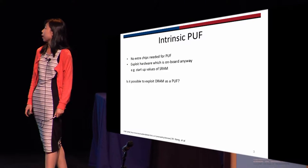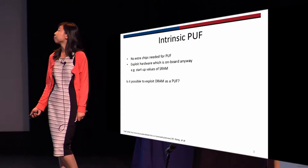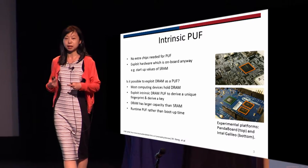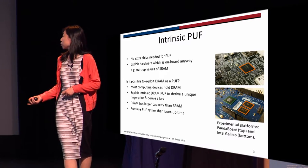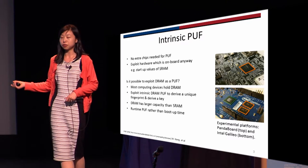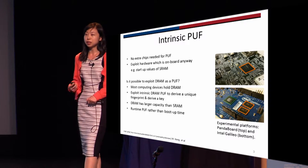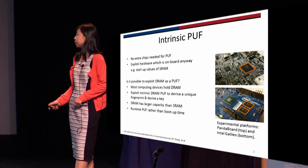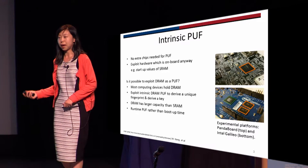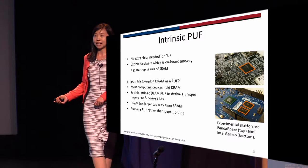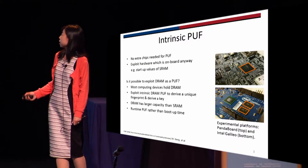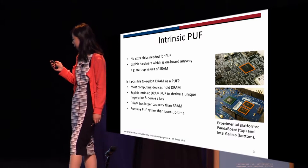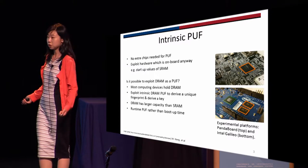Then we were wondering whether it is possible to exploit DRAM as a PUF. Everyday devices hold DRAM, and it would be nice if we can exploit the intrinsic DRAM to use it as a PUF to derive a unique fingerprint or key for that device. A good thing about DRAM compared to the startup value of SRAM is that DRAM usually has much larger capacity than SRAM, and we can access DRAM at runtime, while the SRAM PUF can only be accessed at startup time.